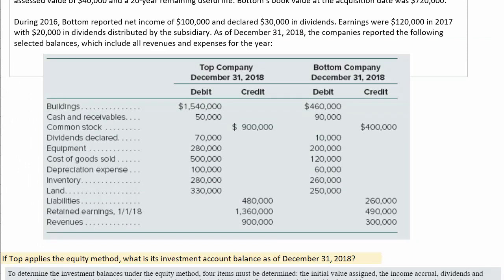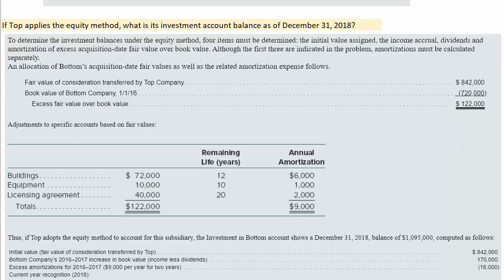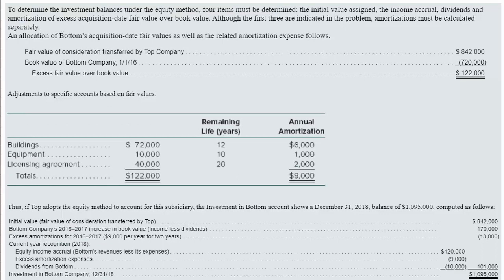To come up with income for that last year, you take revenues less expenses. You go through that same routine considering how it impacts retained earnings to figure out dividends — though the dividends of $10,000 are actually provided for you, so you only have to do the income calculation. Once you've adjusted for all those transactions, you've calculated the investment in Bottom Company at the end: $123,118.